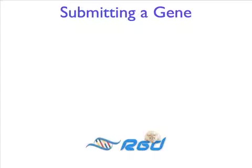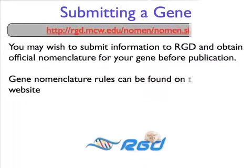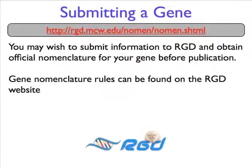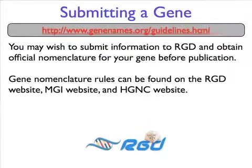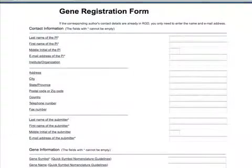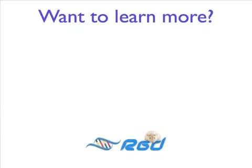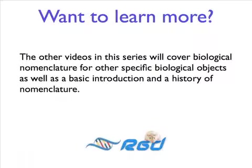RGD reviews gene nomenclature on an ongoing basis, so if you are a researcher who has discovered a new rat gene, you may submit to RGD and obtain official nomenclature for your gene before publication. Gene nomenclature rules can be found on the RGD website, MGI website, and the HGNC website. You will also find a convenient registration form on the RGD website. We strongly encourage obtaining official nomenclature prior to publication. If you are interested in more information on biological nomenclature, the other videos in this series cover QTL and strain nomenclature. Thank you very much for watching this presentation.